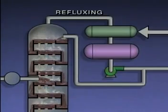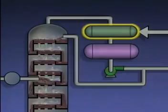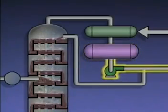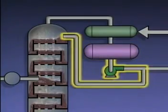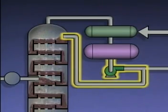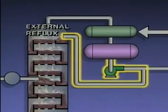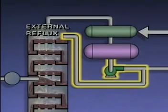One of these methods is called refluxing. The vapors coming off the top of the tower are condensed in a condenser and then collected in a receiver. Part of the liquid from the receiver is sent to storage or to other units in the plant as the tower's overhead product. The rest of the liquid is pumped back into the top of the tower. The liquid that's reintroduced into the tower is called external reflux. Because it consists of liquid that was cooled in the condenser, the external reflux is cooler than the liquid in the top of the tower.